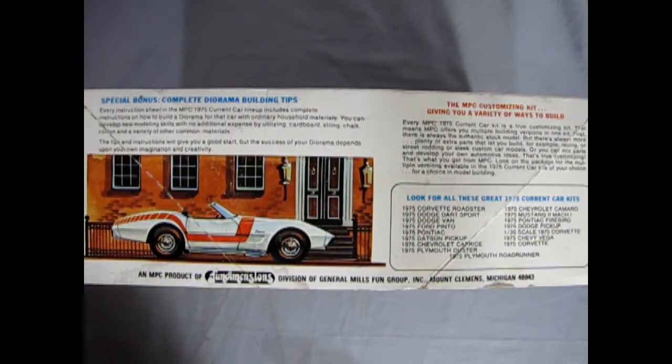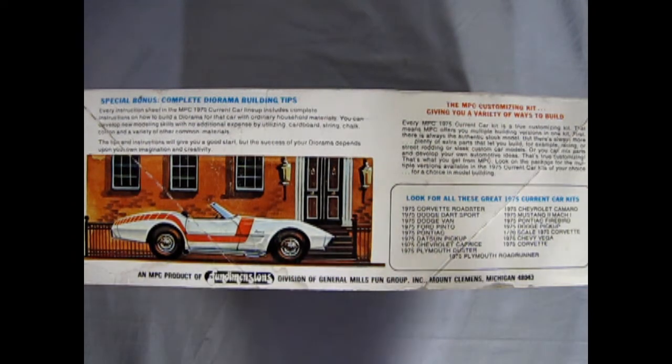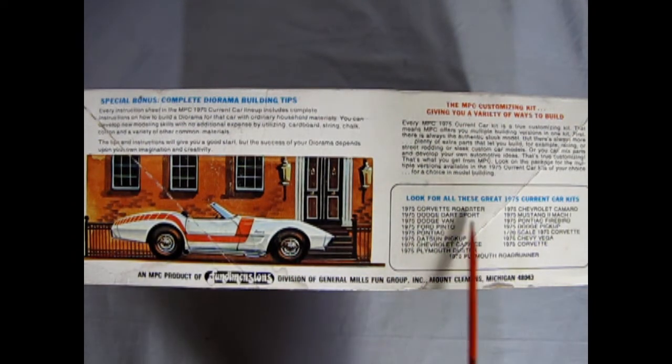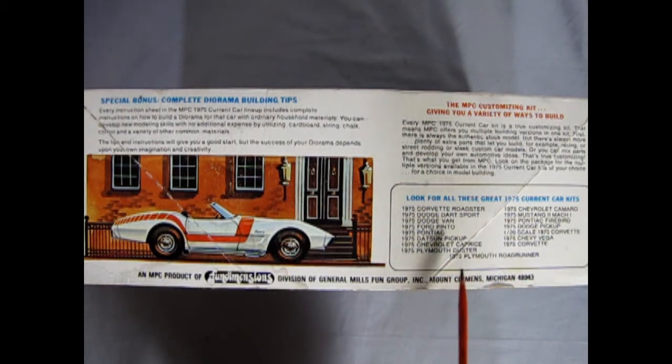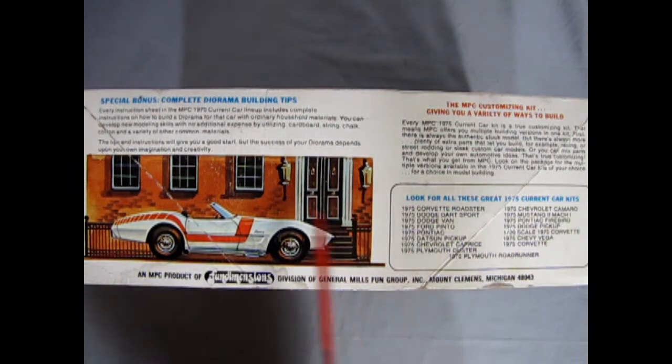On this side of the box we get a special side view of our Corvette showing the decal location and a great tip on making a background in here for your diorama. And then we have look for all these great 75 current car kits. Now this kit was an annual back in the day, so you can see things like the 75 Corvette Roadster, the Ford Pinto, the Plymouth Duster, the Plymouth Roadrunner, and all kinds of other great things.